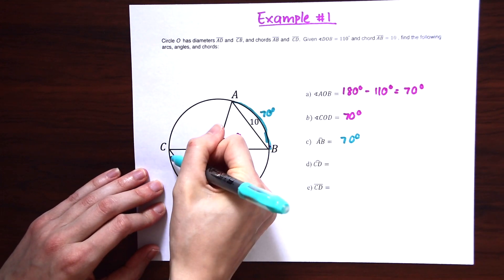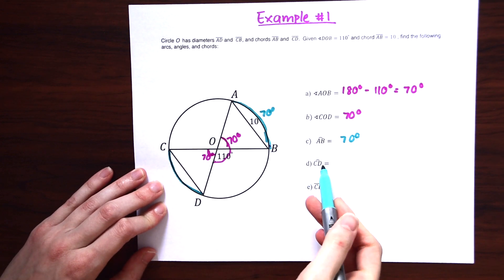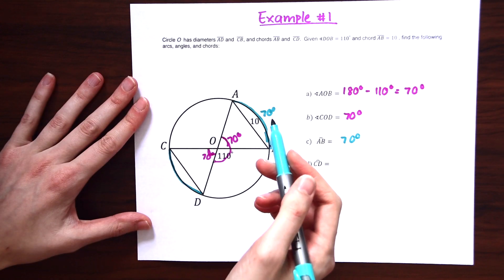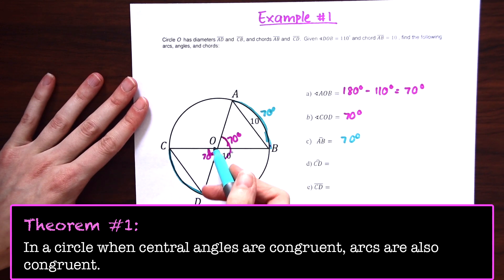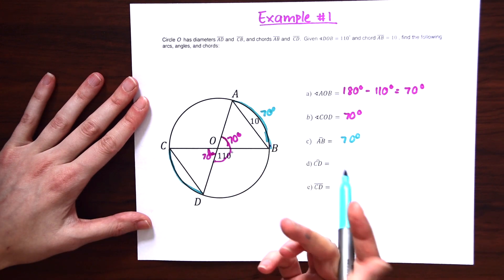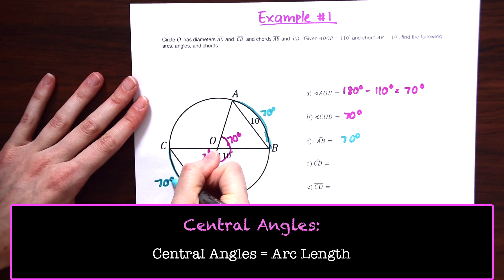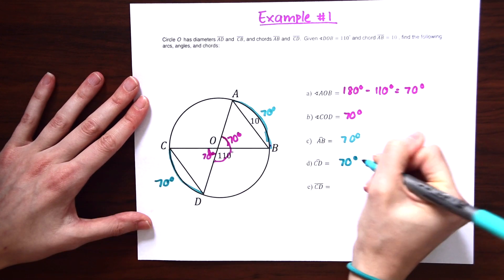And now for arc CD, for this next part of our question here, this is based on theorem number one that we went over. If angles are equal to each other, then arc lengths are also equal to each other. There's a bunch of ways to think about this. So there's the theorem number one, or you could see that, oh, we have 70 degrees here, so we know that we're going to have 70 degrees here. So this is also equal to 70 degrees.